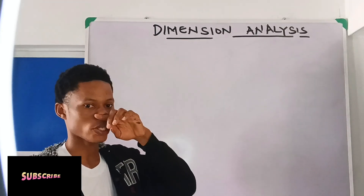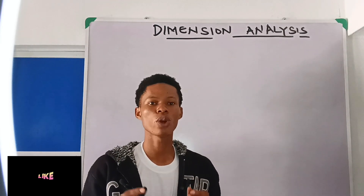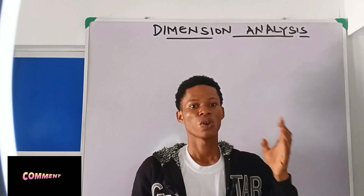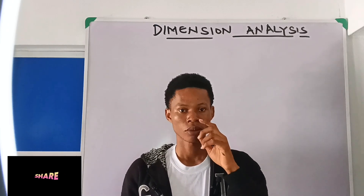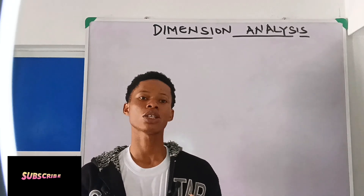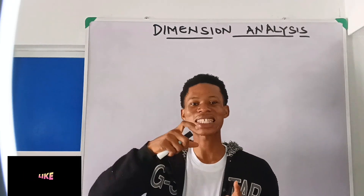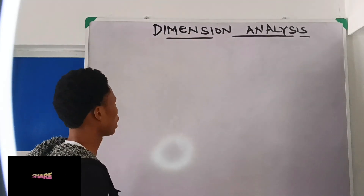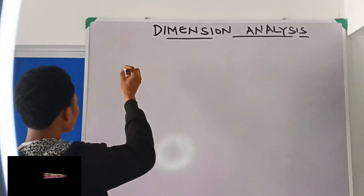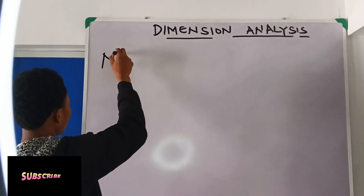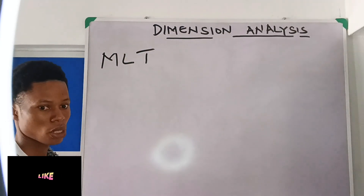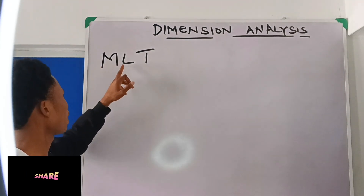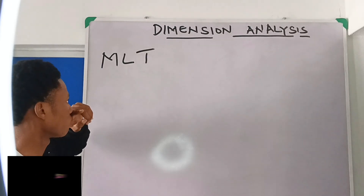Dimension analysis. Anytime you hear dimension analysis, we are relating any substance with the fundamental quantities. A fundamental quantity is any quantity that can stand on its own. In dimension analysis, basically, we are relating a quantity with mass, length, and time. Those are the three main fundamental quantities — mass, length, and time.